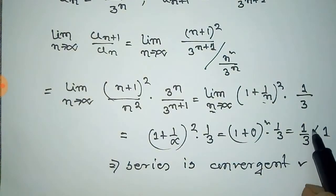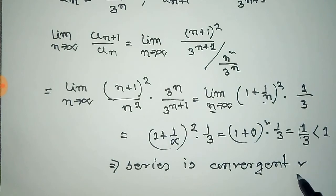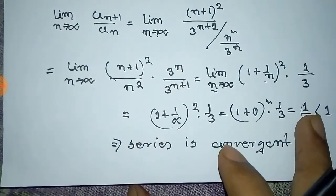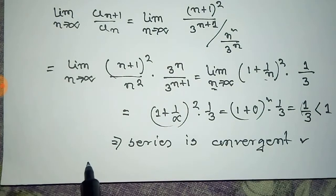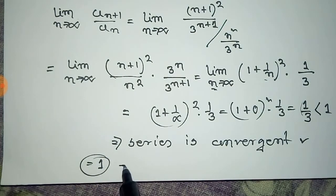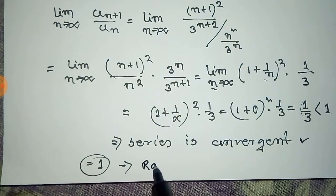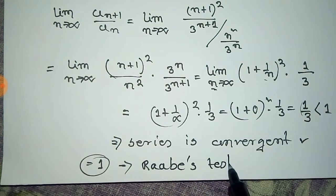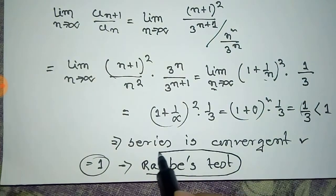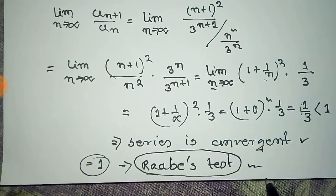From the formula, if the value were greater than 1 then it would be divergent, and if it were equal to 1 then the ratio test fails and we should take the Raabe's test. We shall discuss the Raabe's test in our next video. Thank you.